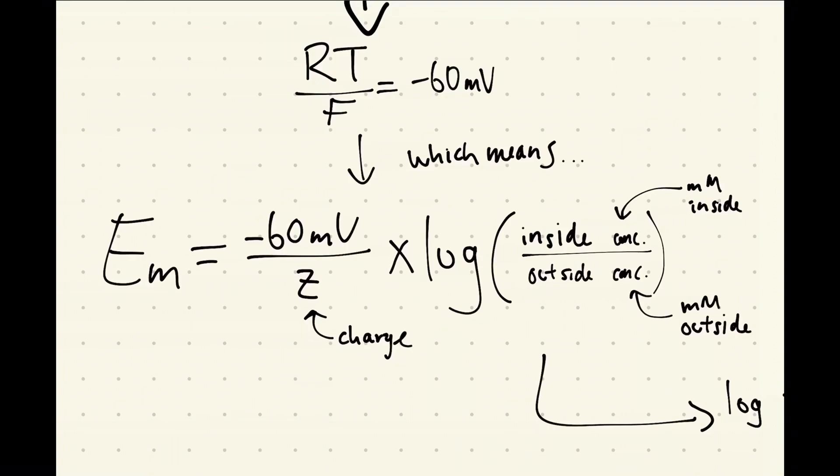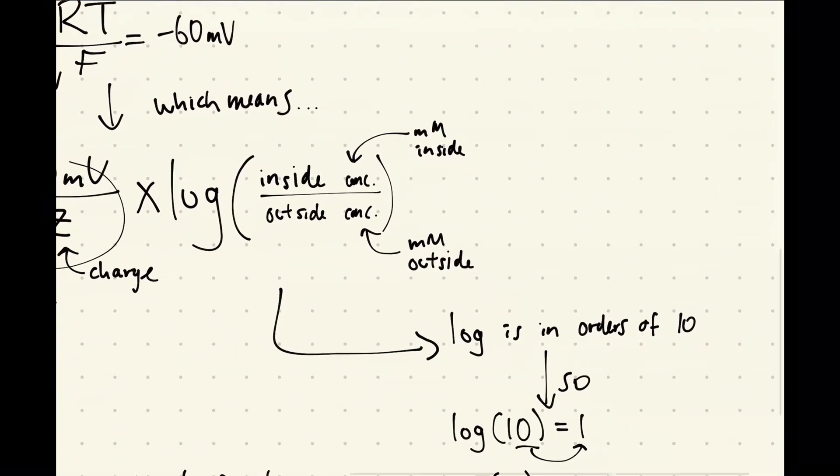So Z, for example, if we're just looking at sodium here, which is plus one charge, this is going to equal negative 60 over plus one, which equals negative 60 millivolts. So that makes the equation very simple.